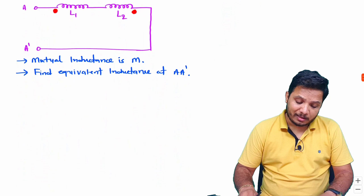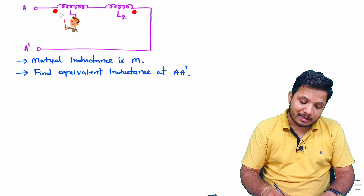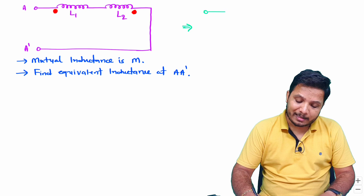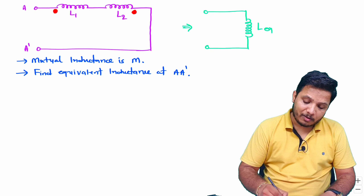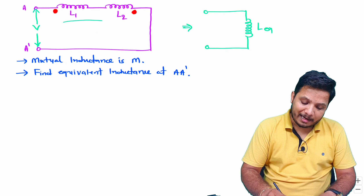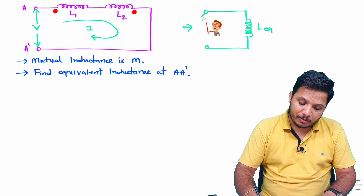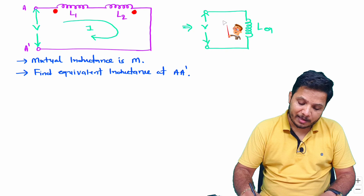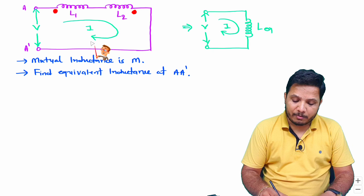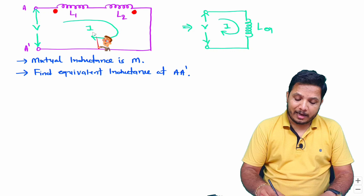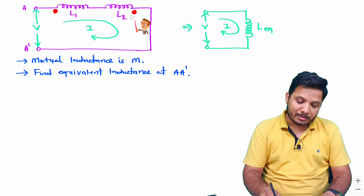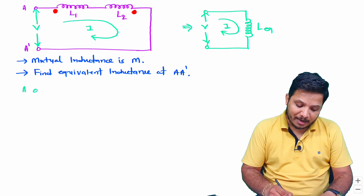Now one more combination to consider: the entering-leaving condition. For this case, again we define equivalent inductance L equivalent. To calculate L equivalent, we connect supply V, which generates current I in the loop. By applying KVL we will identify L equivalent, considering mutual inductance M between L1 and L2 along with the dot convention.